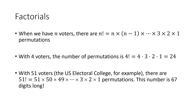You may notice we're getting factorials again. With four voters, we have four choices for first, three for second, two for third, and one for fourth — giving 24 total permutations. In general, the factorial gives us the total number of permutations. For example, the electoral college has 51 voters — the 50 states plus the District of Columbia — and 51 factorial, which is 51 times 50 times 49 and so on, is a 67-digit number. It would be impossible to do by hand, but computers can handle it.